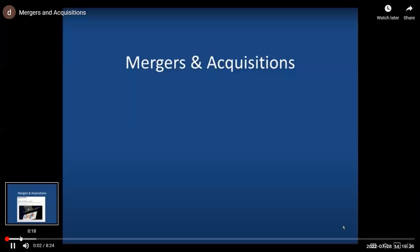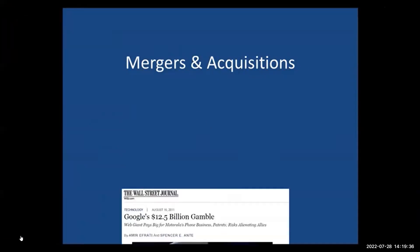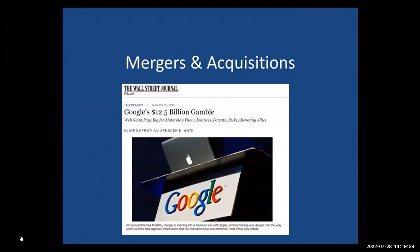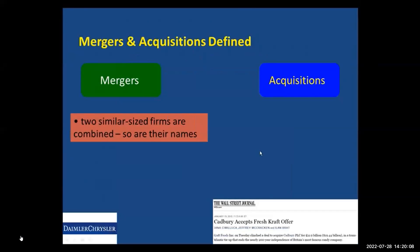This video segment discusses mergers and acquisitions in the context of strategic management. Merger and acquisition activity is extremely important in strategic management, as we continue to see larger and larger deals. One recent example is Google's proposed acquisition of Motorola's cell phone business for $12.5 billion, signaling Google's desire to diversify away from its search engine business. It's instructive to differentiate between mergers and acquisitions because they are quite different.